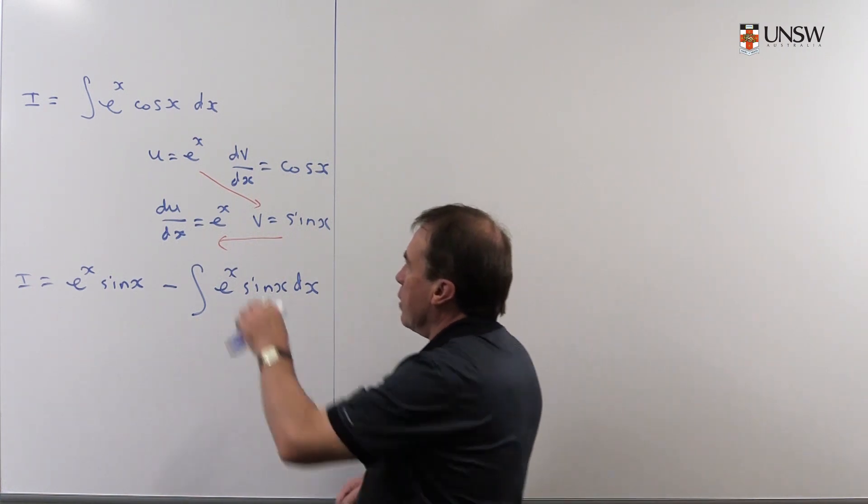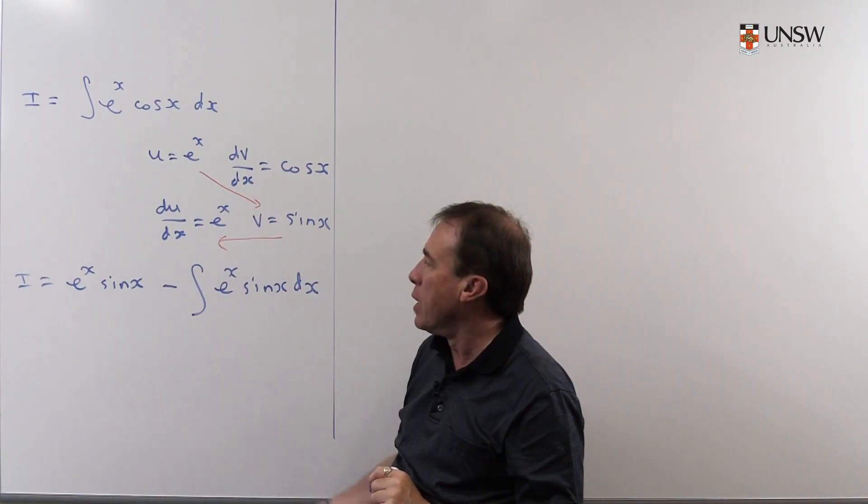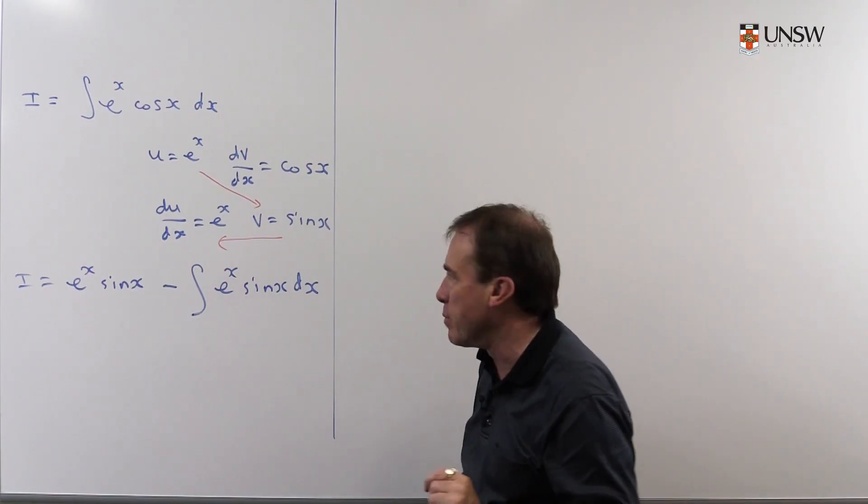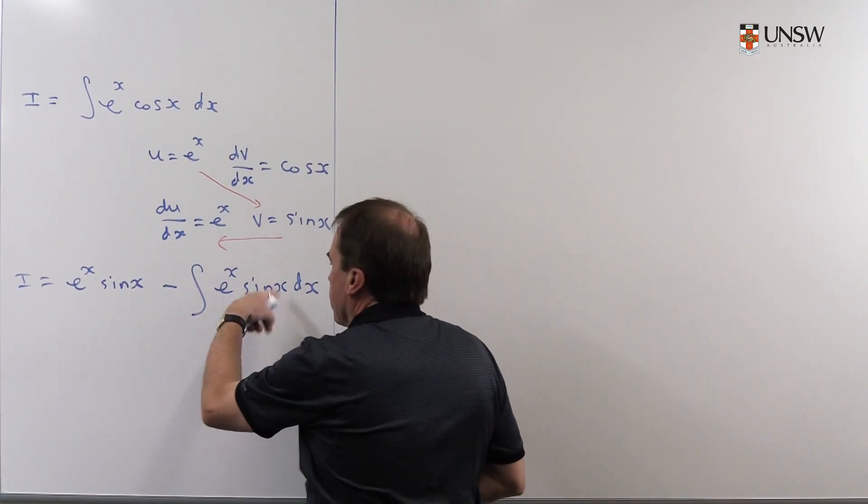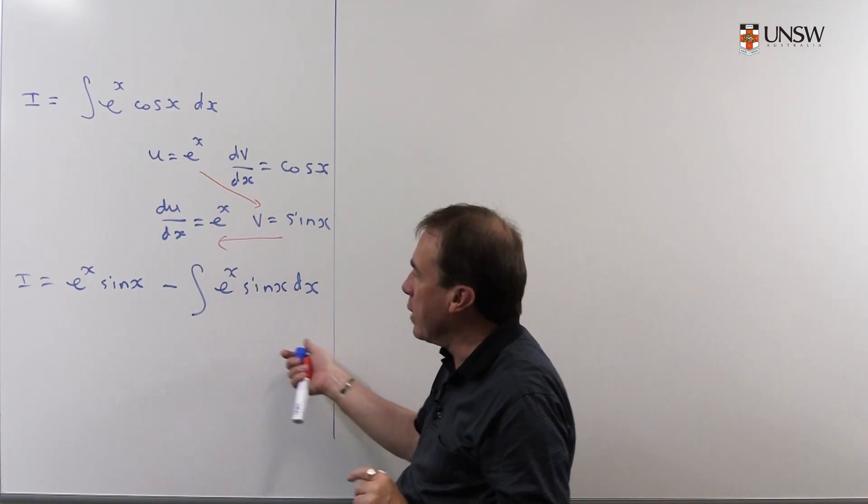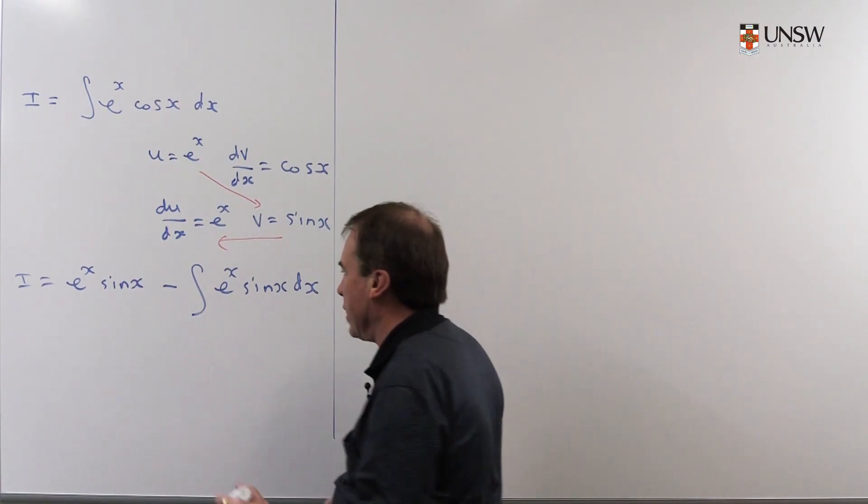Now, I said in the first bit it didn't matter which way you chose the parts, so I chose that way. It does matter now which way I choose the parts. You might like to experiment. If I choose the parts the wrong way around in this part of the integral, you try this and everything will cancel out and you'll get nothing. You might like to try that. Interesting exercise.